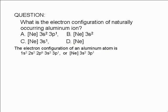The electron configuration of an aluminum atom is 1s² 2s² 2p⁶ 3s² 3p¹, or Neon core 3s² 3p¹.